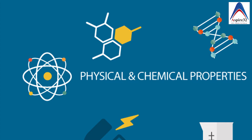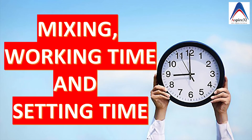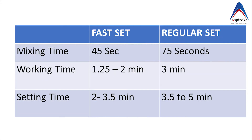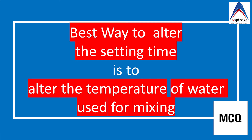Now let's learn the properties of alginate impression material. Depending on the setting time, we get two types: fast set and regular set. As the name indicates, the working, mixing, and setting time is less in fast set compared to regular set, and the details are given in this slide. Please note that these timings are only applicable when you mix the alginate at room temperature.